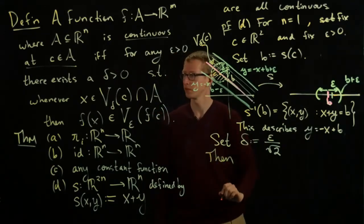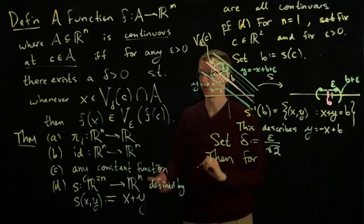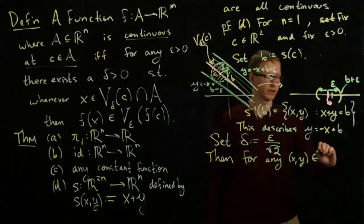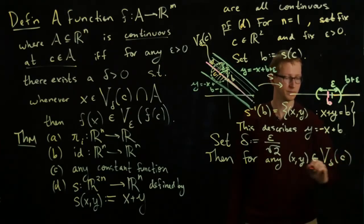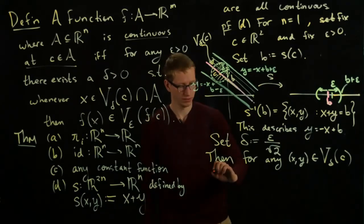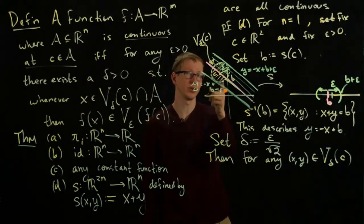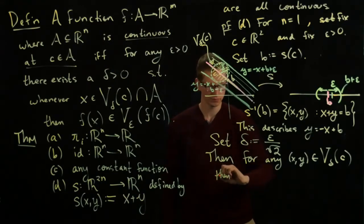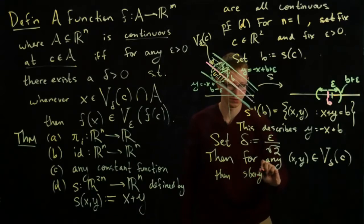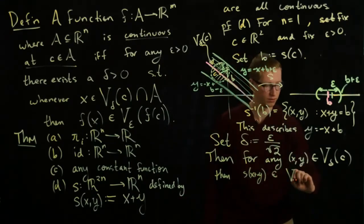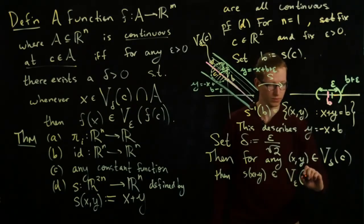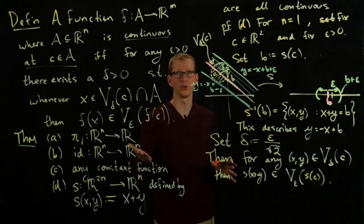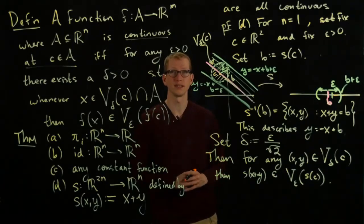In other words, then let's check to make sure, then for any (x, y) contained in this neighborhood here, V_delta around the point c, because this neighborhood is contained within this band and the image of this band is contained in this neighborhood, it follows that the image S(x+y) is contained in V_epsilon around b, which is the image of S(c). And this checks the condition of continuity, which proves that the addition of two numbers is a continuous function of its inputs.